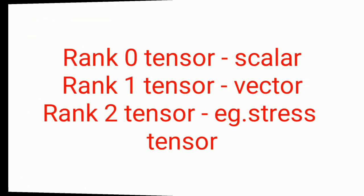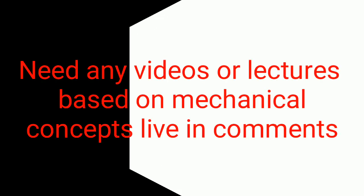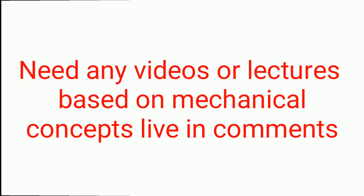So you can come to the conclusion that rank 0 tensor is a scalar, rank 1 tensor is a vector, and rank 2 tensor is termed to be the stress tensor or strain tensor. These are the ranks in tensor. Hope you understand. If you need any videos, leave it in the comments. Thank you.